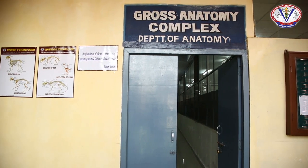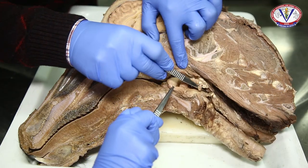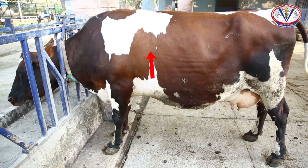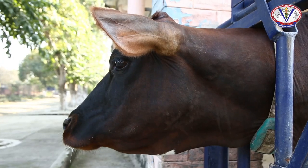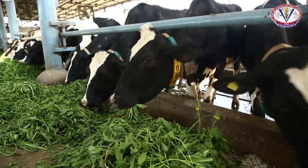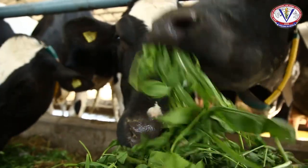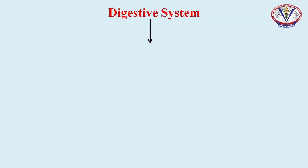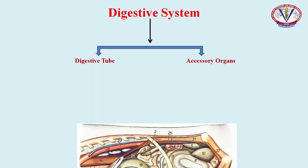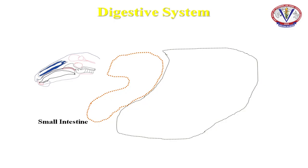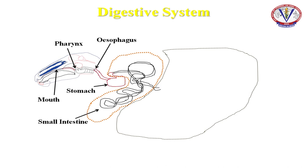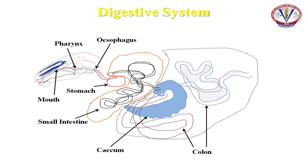In this video, we will learn about the Gross Anatomy of the Digestive System of Ox. The digestive system of ox consists of a group of organs concerned with prehension, mastication, digestion and absorption of food in the body, and expulsion of unabsorbed food material. The digestive system is comprised of two parts: the digestive tube and accessory organs. The different segments of the digestive tube are mouth, pharynx, esophagus, stomach, small intestine, and large intestine, which is further comprised of cecum, colon, rectum, and the terminal portion, the anus.